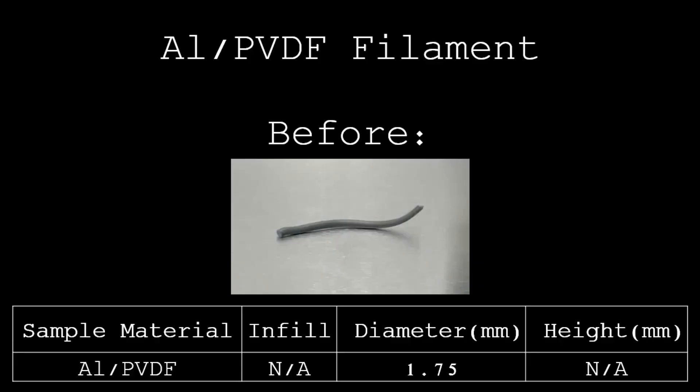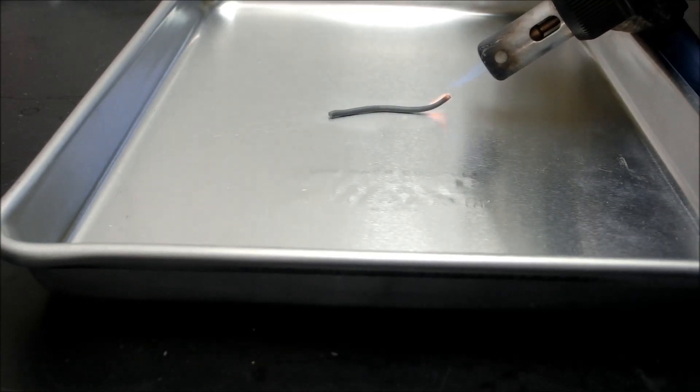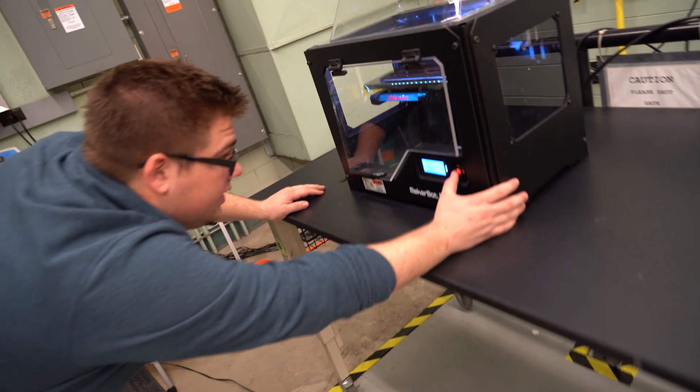We've been developing that filament. It's essentially aluminum particles embedded in a fluoropolymer. The aluminum will fluorinate with the fluorine in the plastic and then you'll get a nice robust reaction. And we can use that filament with really any commercial 3D printers on the market.